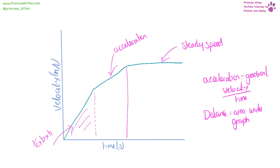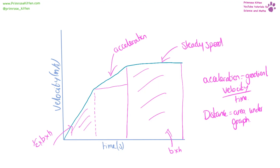A more complex section in the middle might include a triangle, a rectangle, and a triangle. So the area is base times height plus half times base times height, where the height is the height of the triangle.